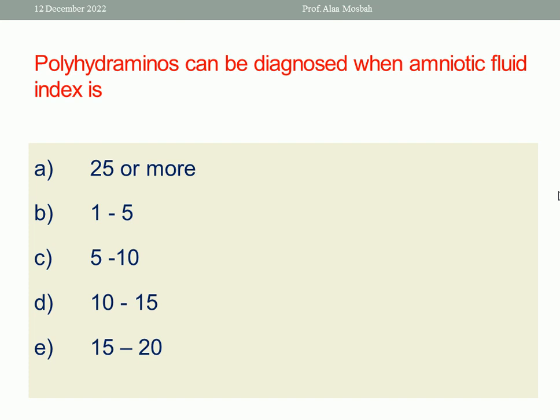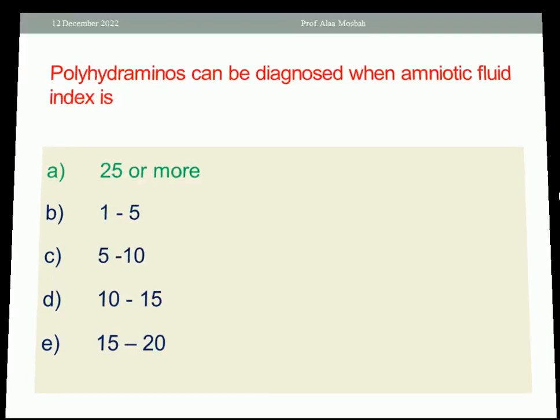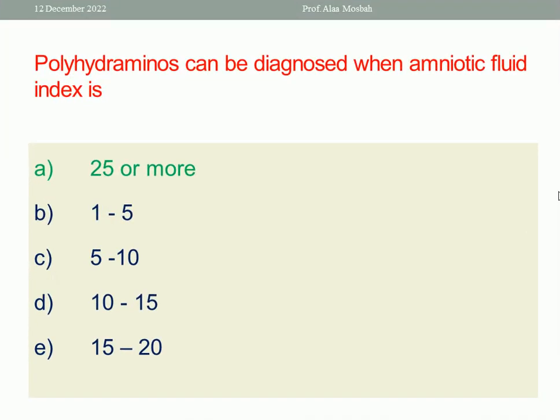Polyhydramnios can be diagnosed when the amniotic fluid index is 25 or more. This is done by ultrasound — we take the sum of the maximum vertical diameter of each of the four quadrants, and if the sum reaches 25 or more, we diagnose polyhydramnios.